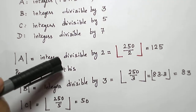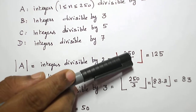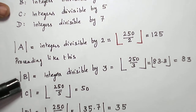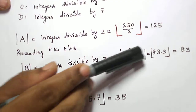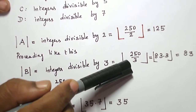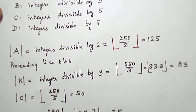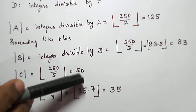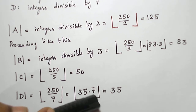The number of integers divisible by 2 is given by the floor function of 250 divided by 2, which is 125. Similarly, the cardinality of B — integers divisible by 3 — is floor(250/3) = floor(83.3) = 83. Integers divisible by 5: floor(250/5) = 50. Integers divisible by 7: floor(250/7) = floor(35.7) = 35.